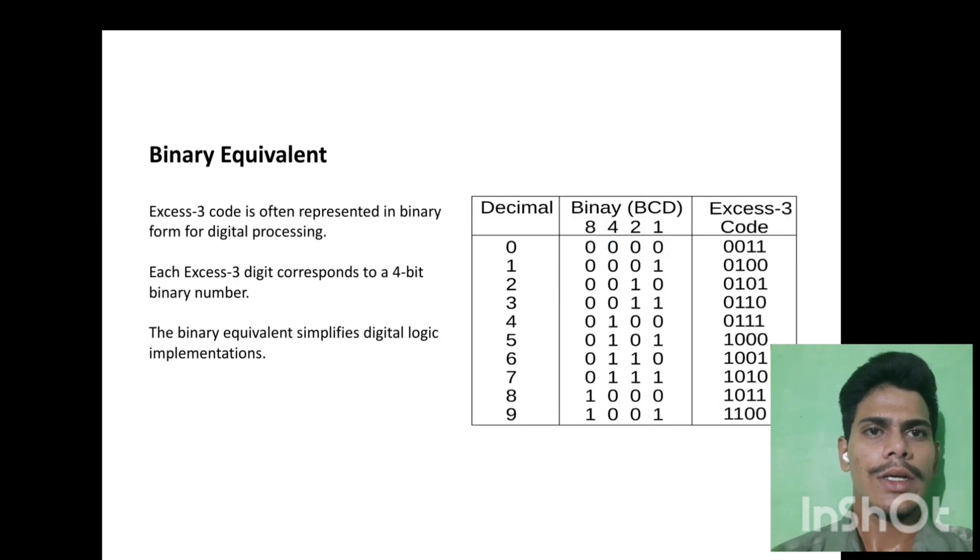Binary Equivalent. XS3 code is often represented in binary form for digital processing. Each XS3 digit corresponds to a 4-bit binary number. The binary equivalent simplifies digital logic implementations.